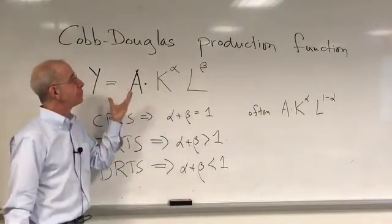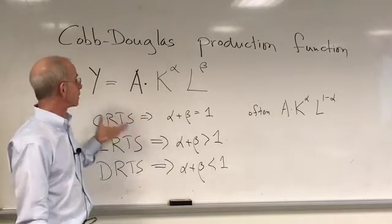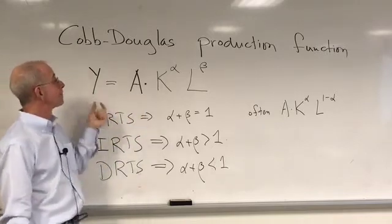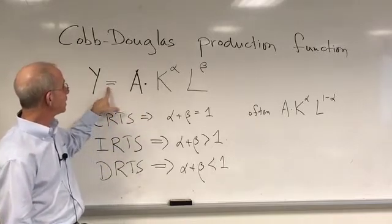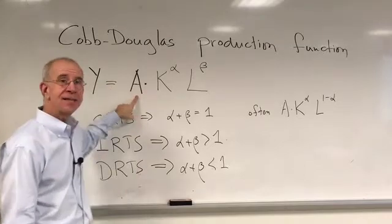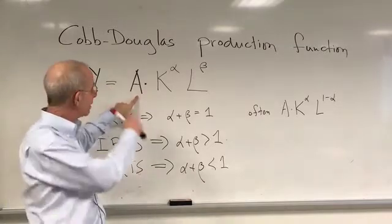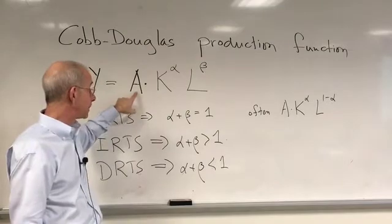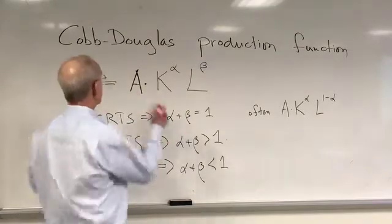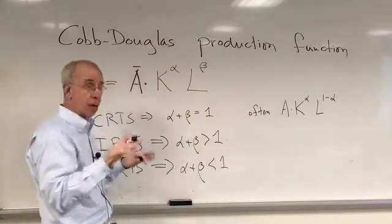You can have a general version of a Cobb-Douglas production function to produce Y is going to be equal to some constant A. I'll come back to what that means in just a minute, but this is constant, that stays right where it is.